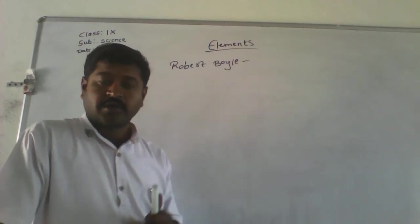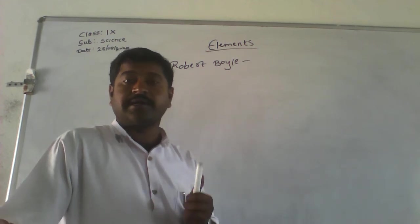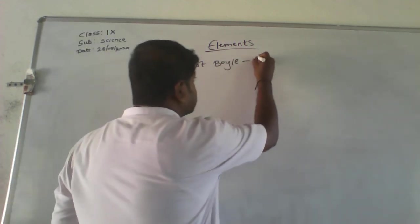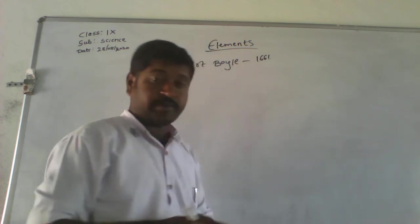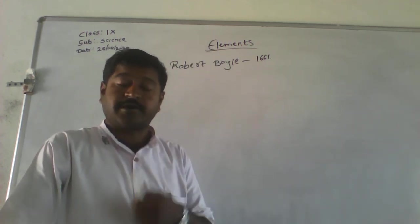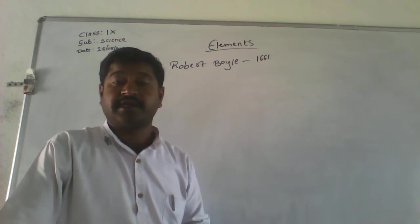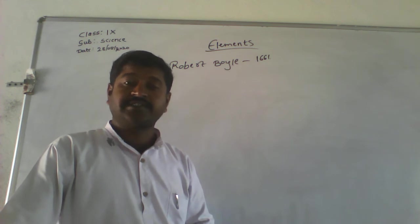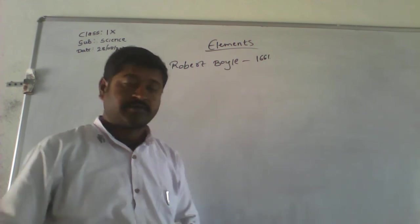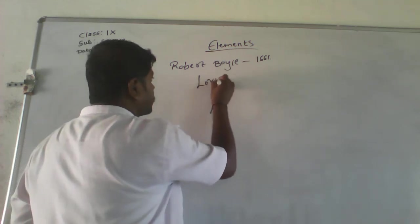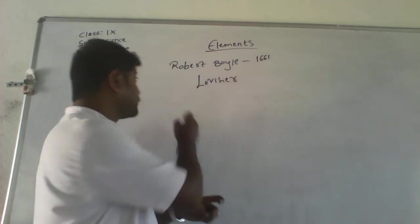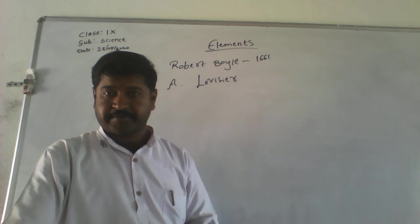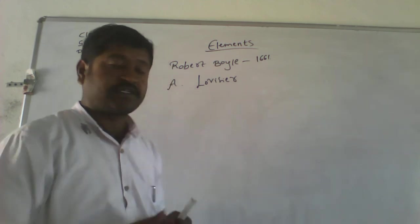Robert Boyle is the scientist who first gave the word called 'element.' He coined this term in 1661. Then later, Antoine Lavoisier, the French scientist, by experimenting, gave the definition of this element.